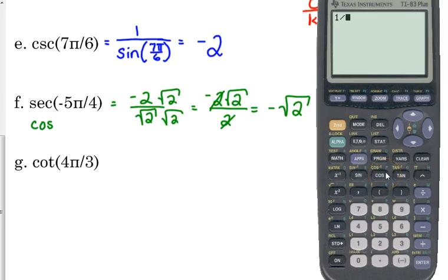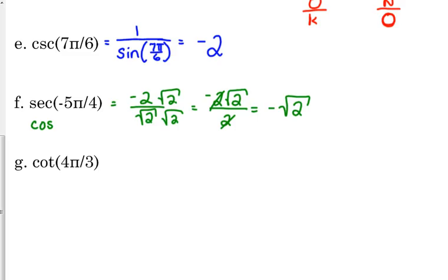So you've got to do 1 over cosine, and just type in that angle, negative 5π over 4. And it's going to give you a nasty decimal. But to check and see if you've got the same value, just type in what you said the answer was. I said the answer was negative square root of 2. And when I press enter, those decimals are the exact same thing. So negative square root of 2 is the correct answer.